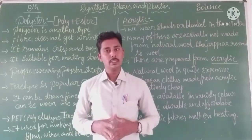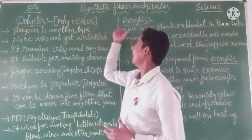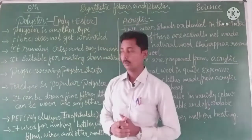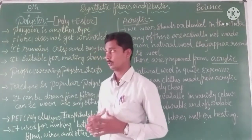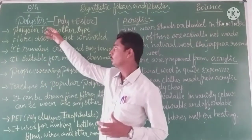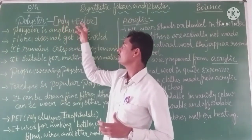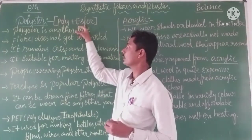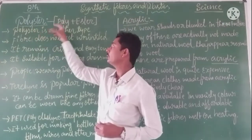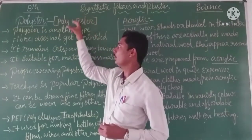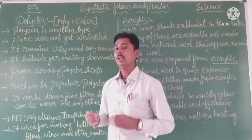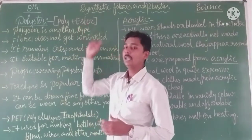Today we are going to learn about two more types of synthetic fiber: polyester and acrylic. Polyester is made from chemical substances — specifically, ester. 'Poly' means many, and 'ester' is a chemical substance. Small units of ester join together to form a large unit called polyester, meaning repeating units of ester form the polymer polyester.